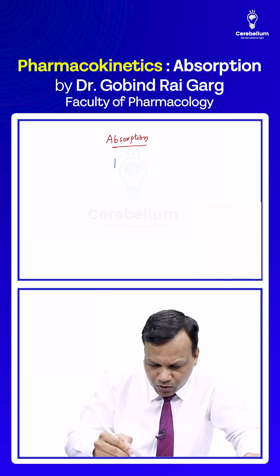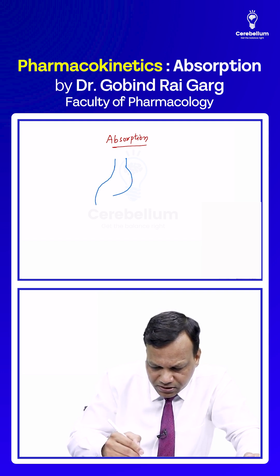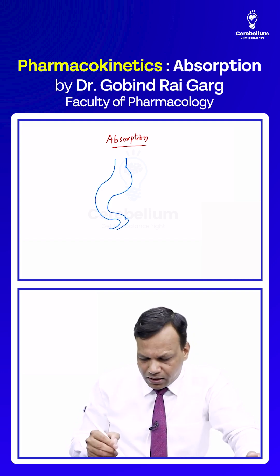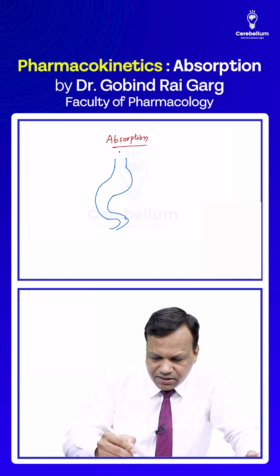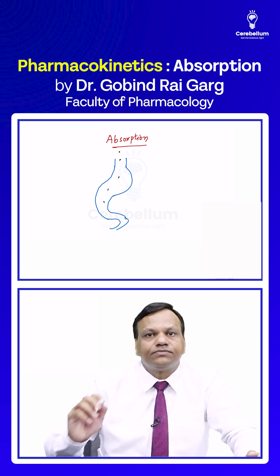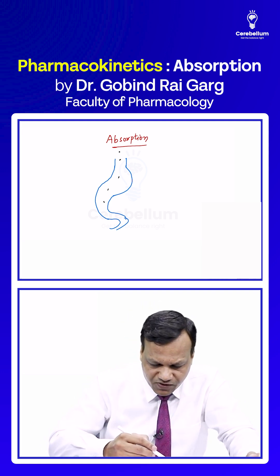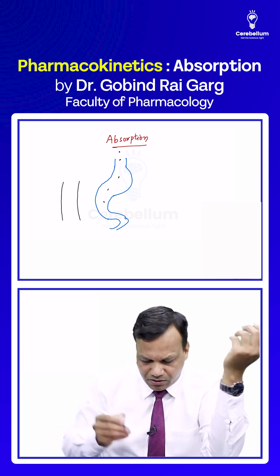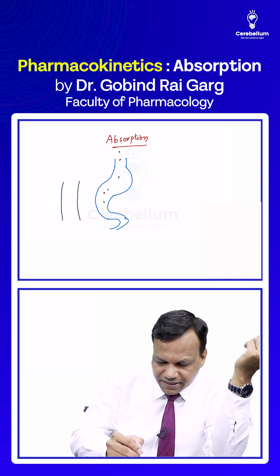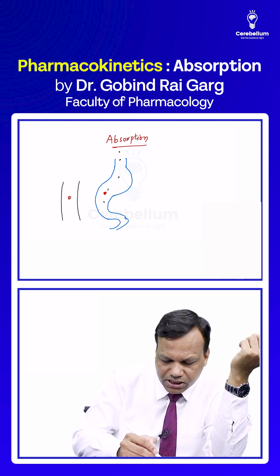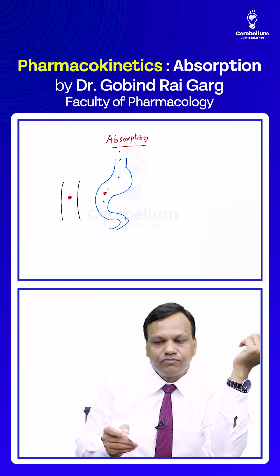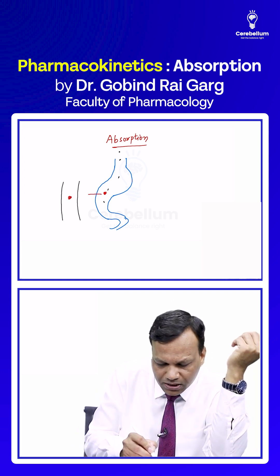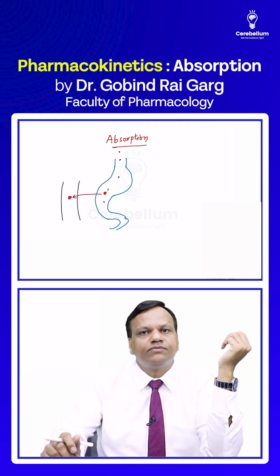If we give a drug orally, it will come into the esophagus, stomach, and intestines. The drug will come in these areas, and from these areas, we want the drug to reach the blood — the systemic circulation. So we want the drug from the GIT to reach the blood.